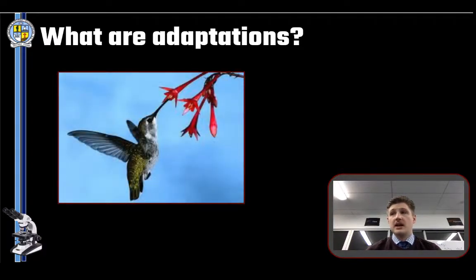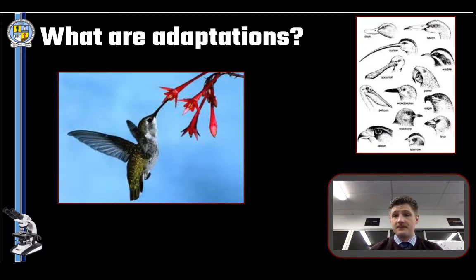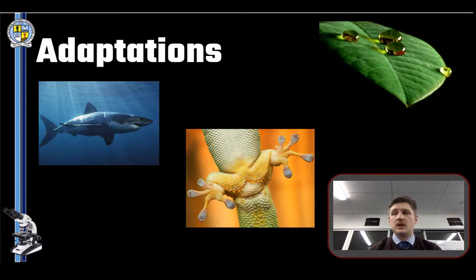Here you can see a hummingbird. It has a number of adaptations, one of them being its beak and another being its ability to fly and hover. Birds are a great example, particularly in New Zealand due to their extensive diversity. So adaptations — have a look and listen to those three key words: physiological, structural, and behavioral. What do those three words mean?